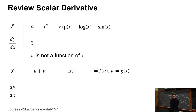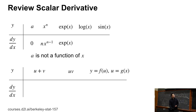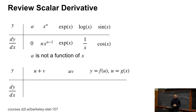If y equals x to the power of n, the derivative is n times x to the n-1. e to the x is still e to the x, log x is 1 over x, and sine x is cosine x.